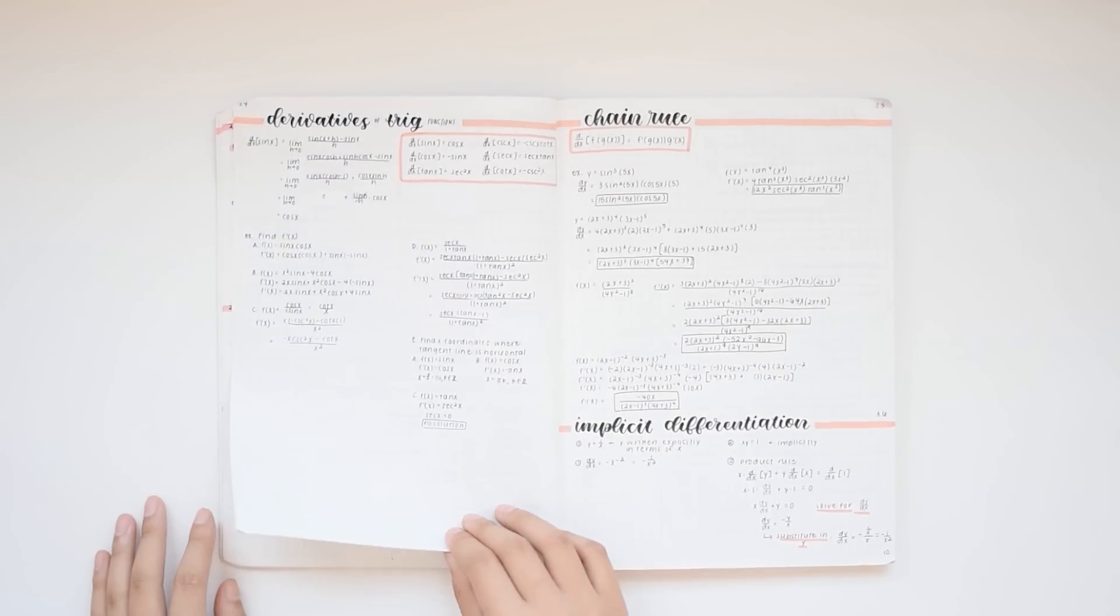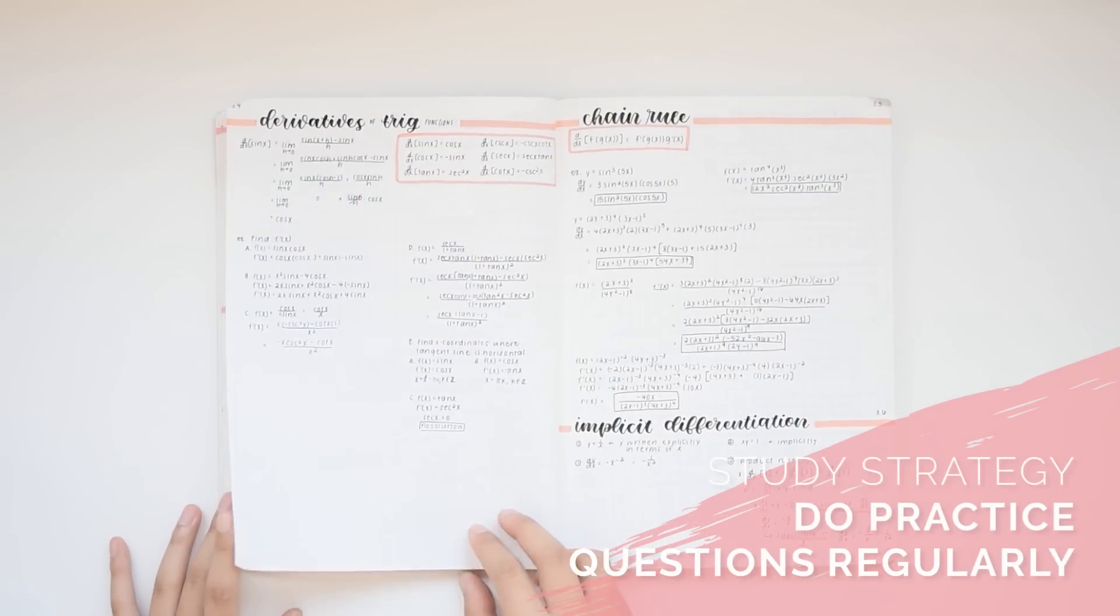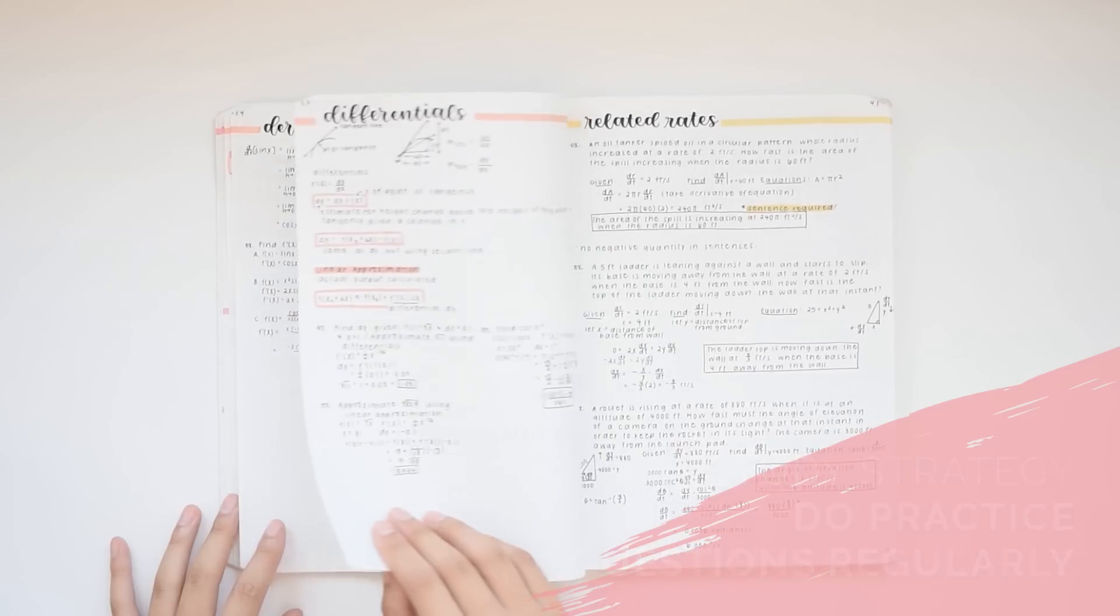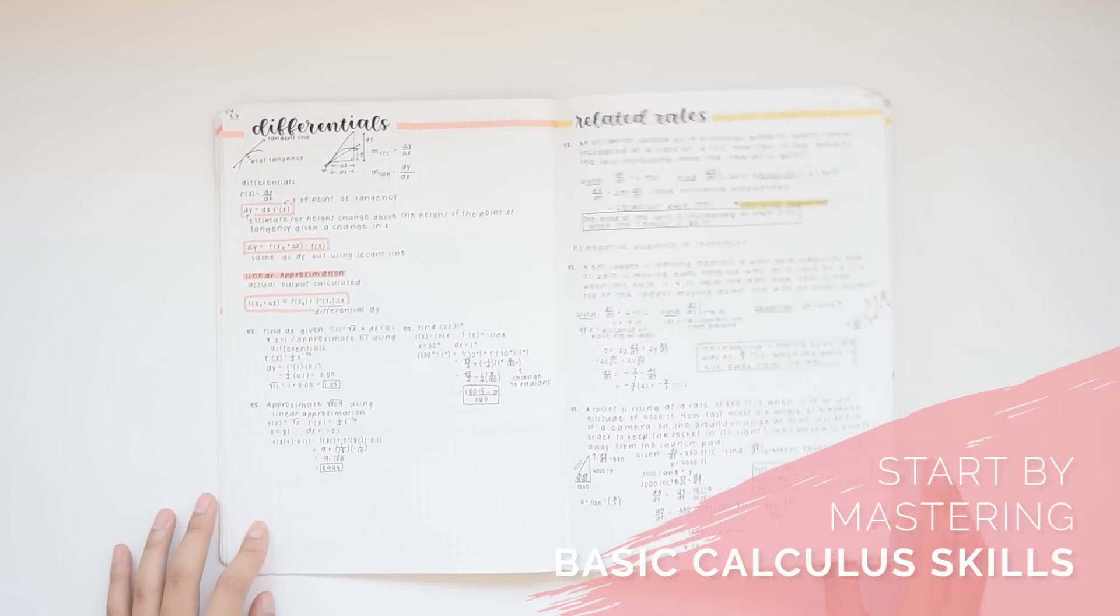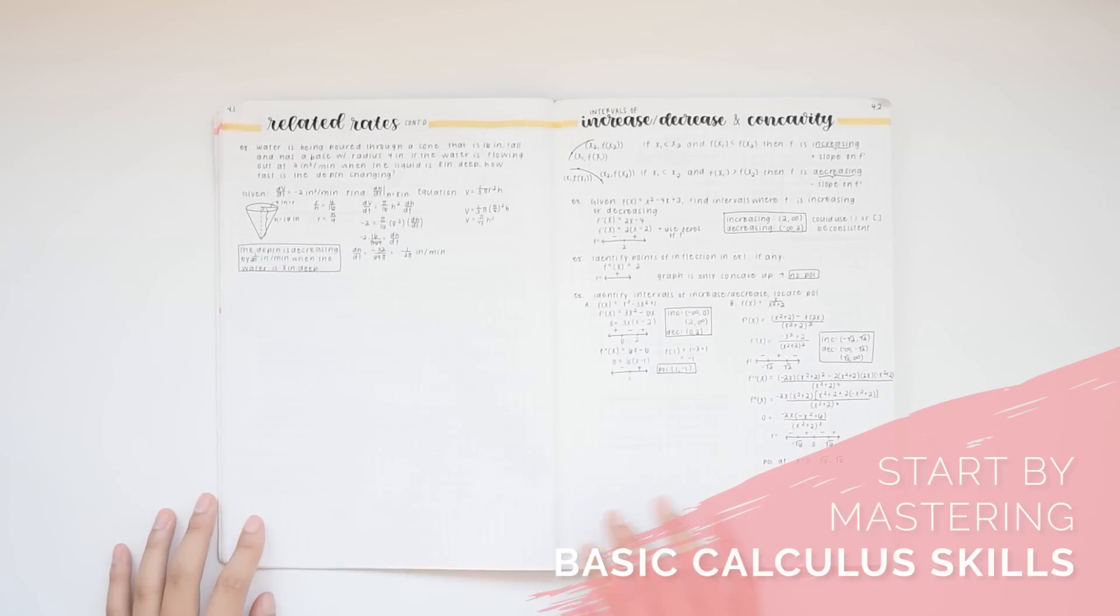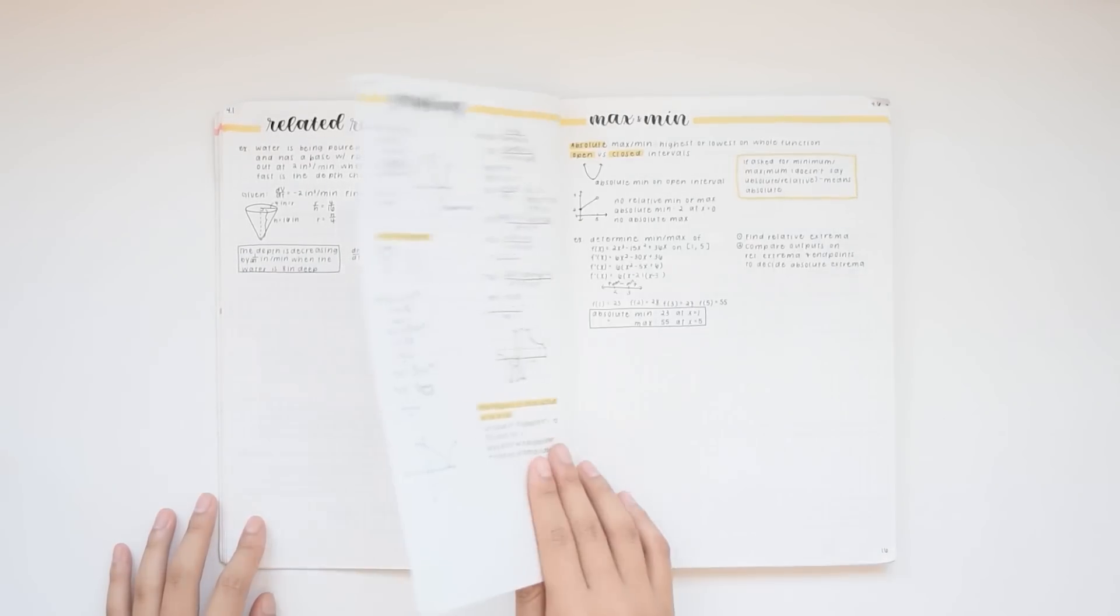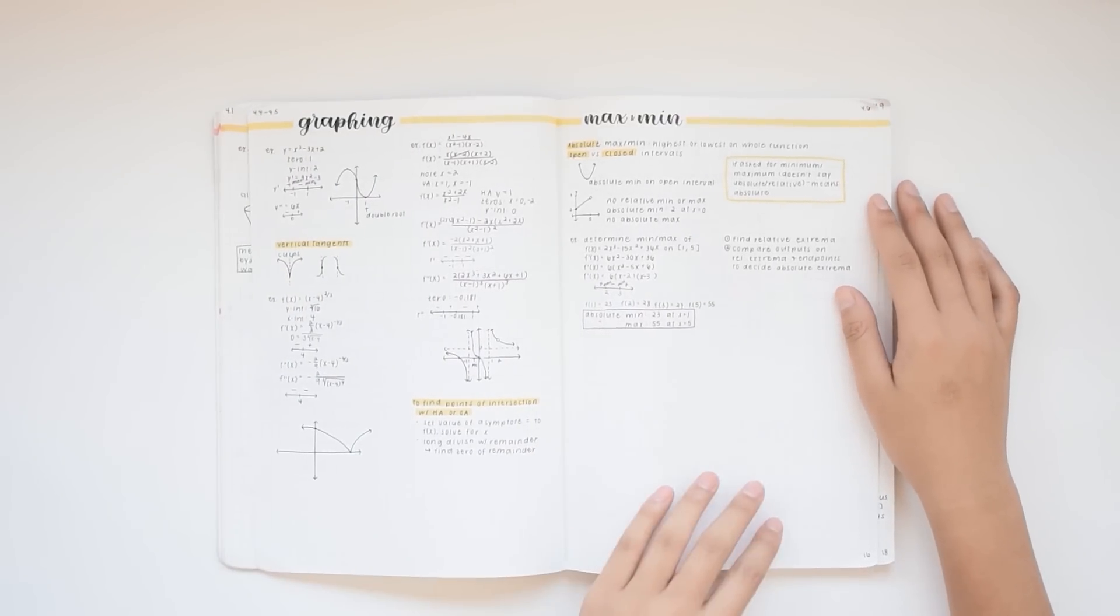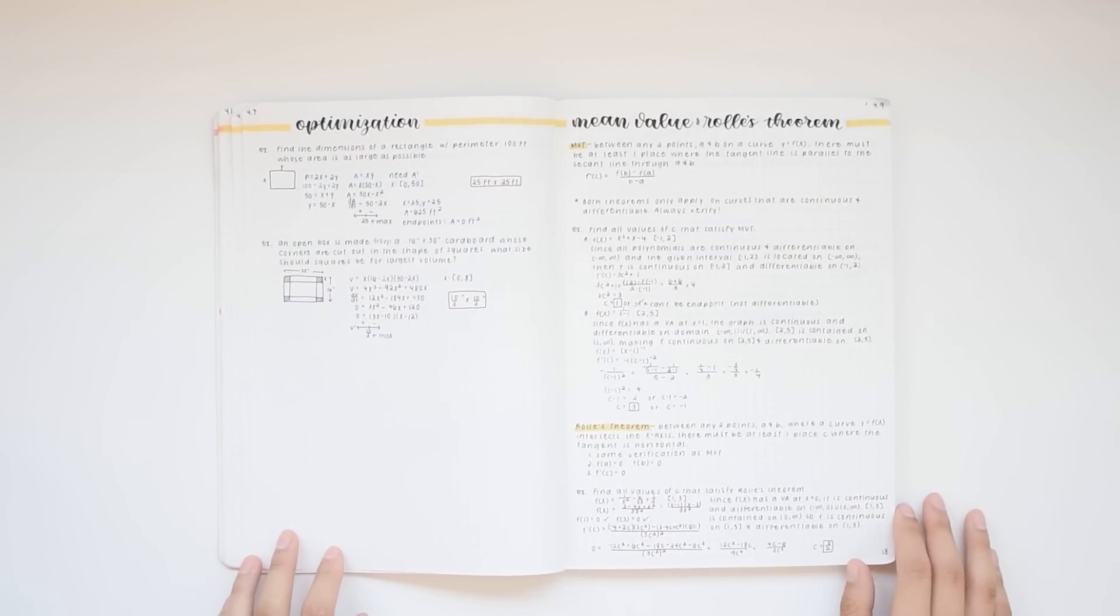First of all, the main study strategy that I recommend is just doing a lot of practice questions throughout the school year, not just cramming before the AP test. You want to start off by learning and practicing the basic skills like how to do a derivative, how to calculate an integral, and you can find practice questions in your homework, your textbook, and there are a lot of other resources you can draw from like the internet or prep books or other textbooks.